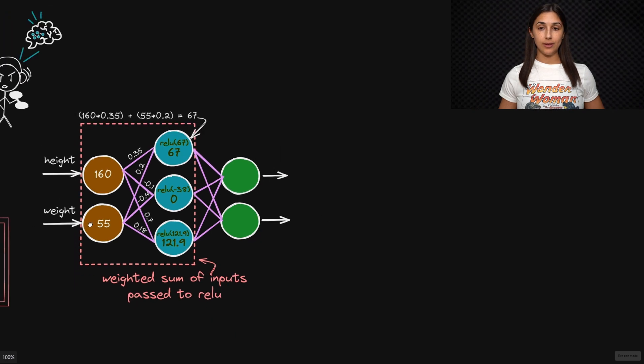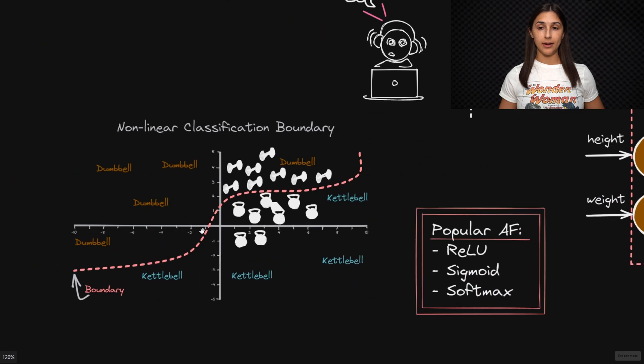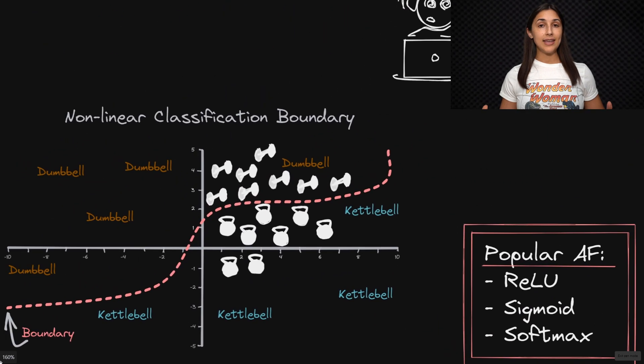We can actually illustrate this a bit better with a diagram here. Typically, the type of mapping that we attempt to learn with a neural network is oftentimes more complex than just a simple linear one.